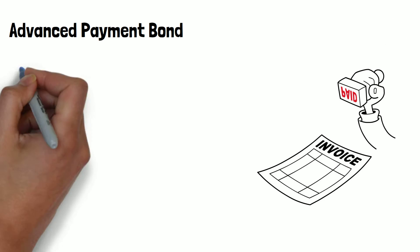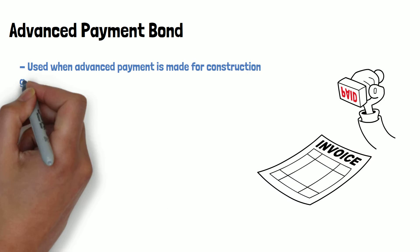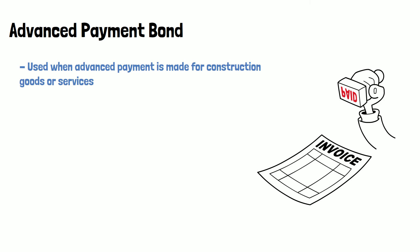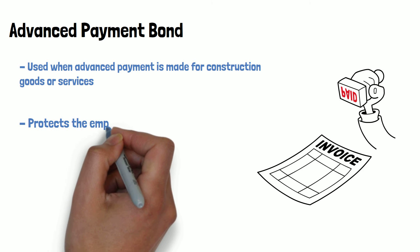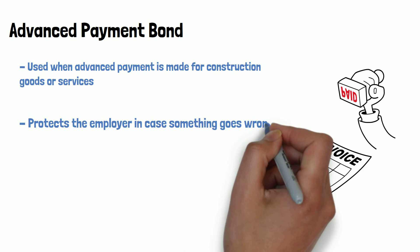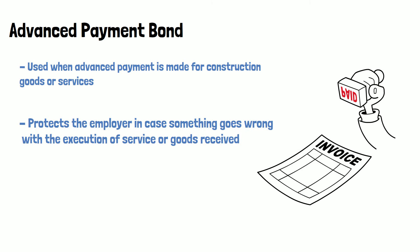Advance payment bond. An advance payment bond is used when advance payment is made for construction goods or services. Sometimes in construction, advance payment is made when contractors incur significant startup costs for providing goods or services. This bond protects the employer in case something goes wrong with the execution of service or goods received.